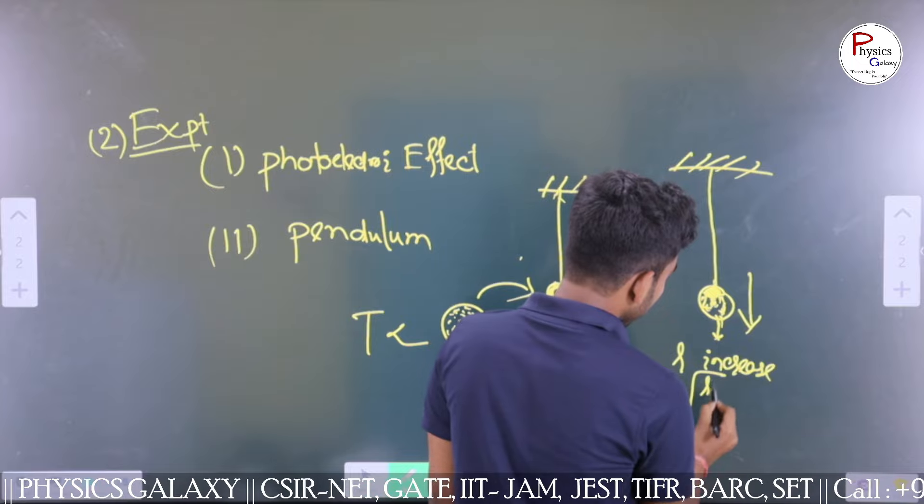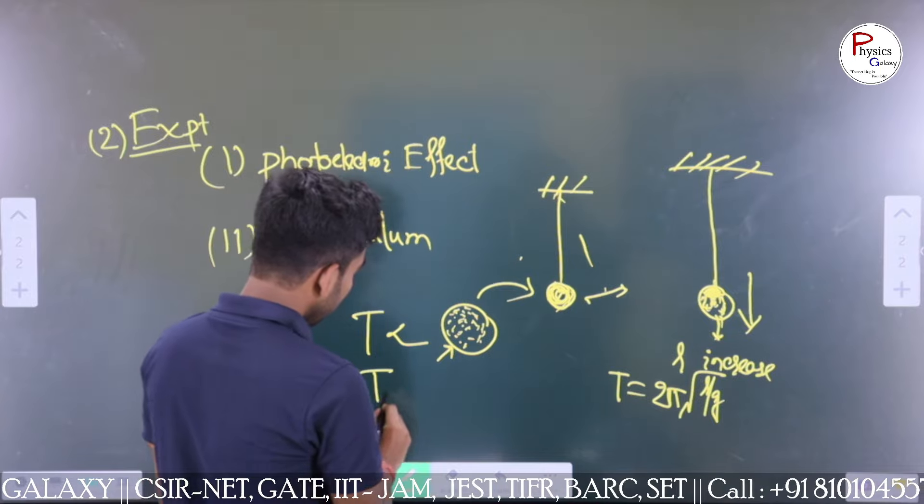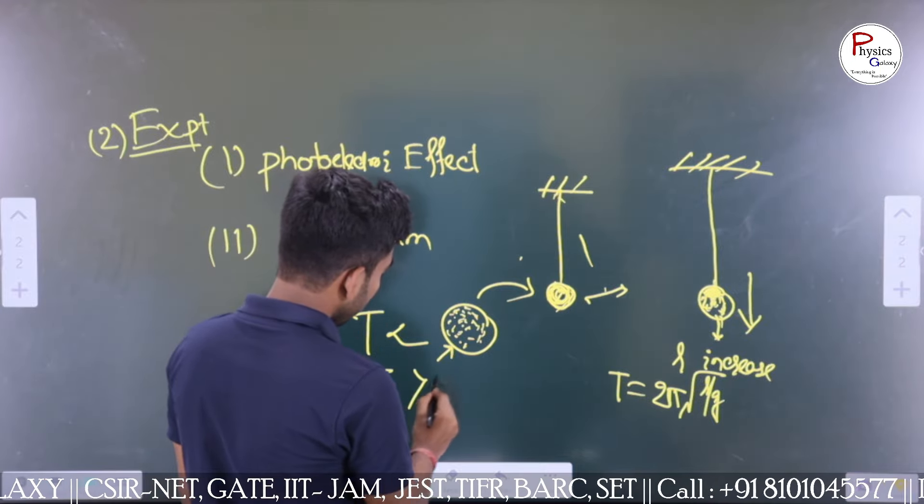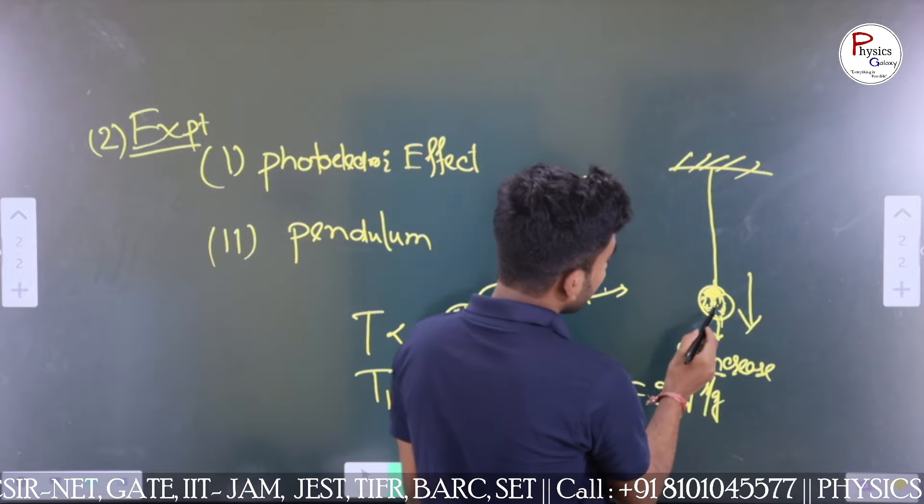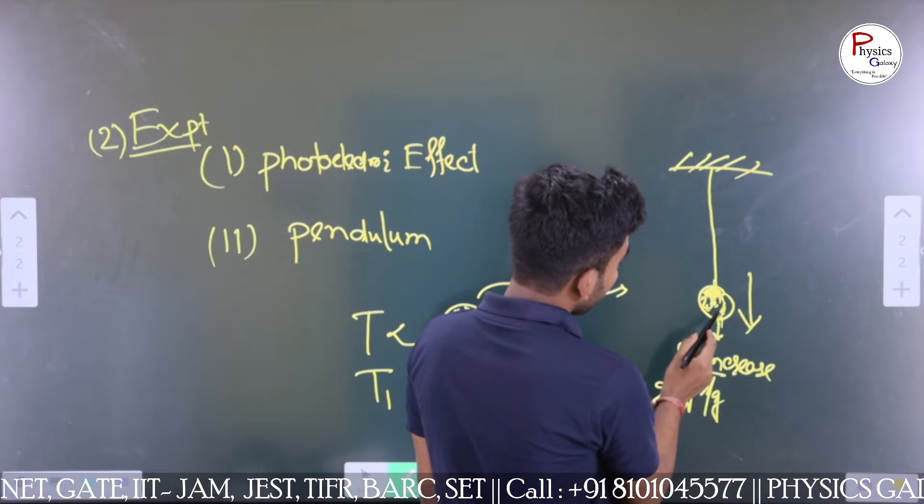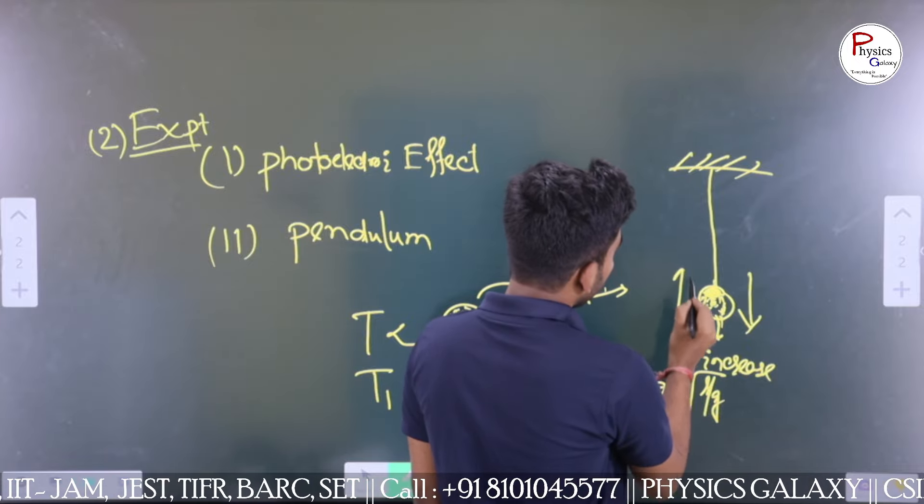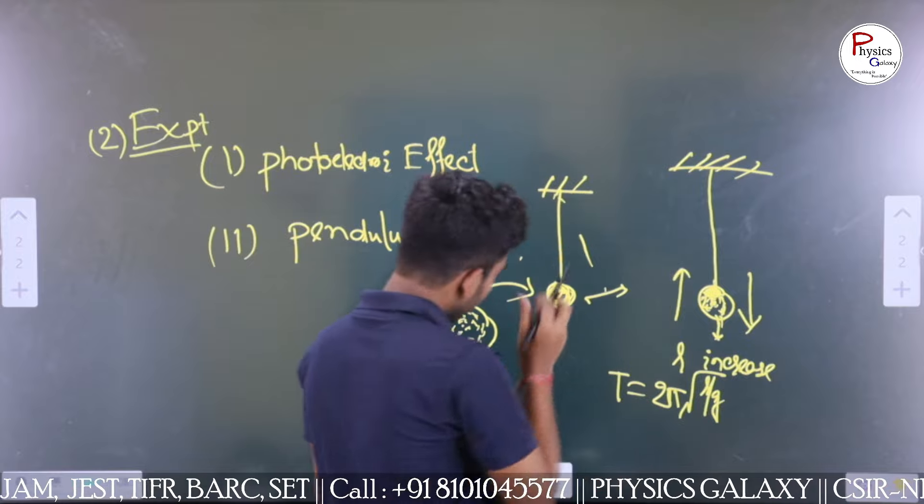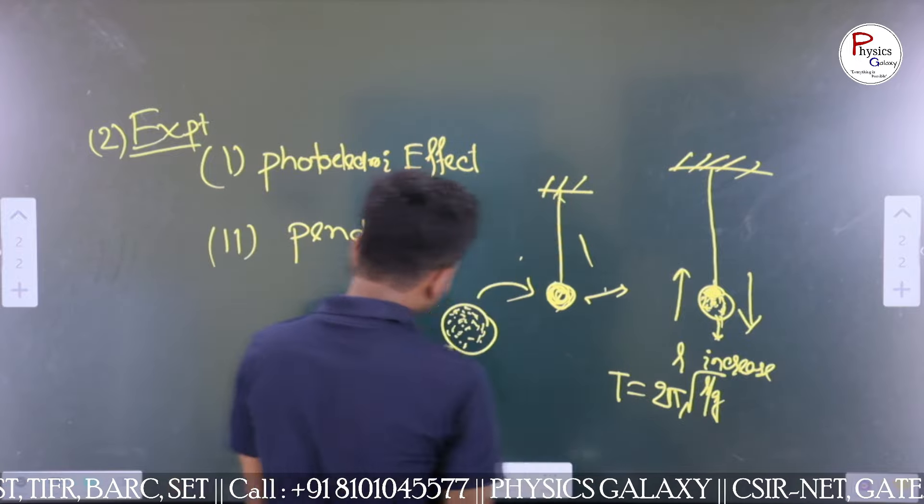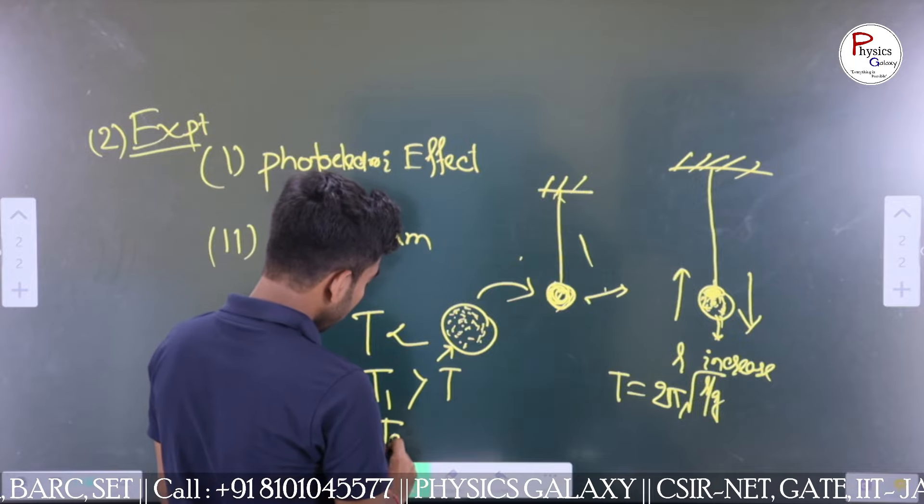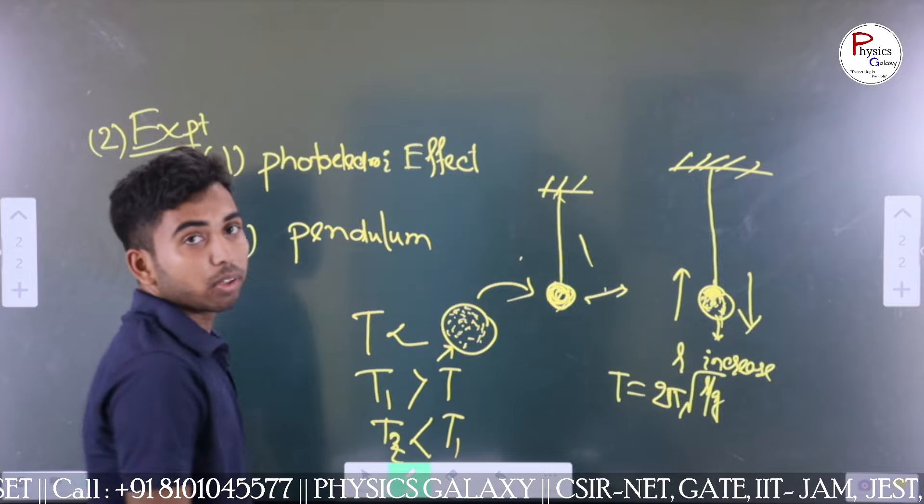The time period T = 2π√(L/g). Firstly, the time period will increase from the normal time period. After that, when the water is completely free from the balloon, the center of mass gets upward and length will be less than before. Then the new time period T₂ < T₁. At first the time period increases, then after that it also decreases.